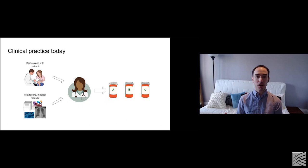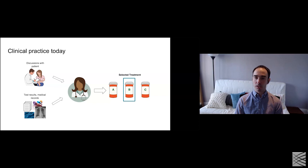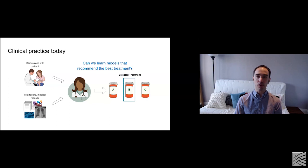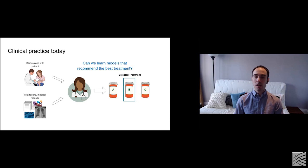Clinicians make treatment suggestions via a very complex process — discussions with patients, test results, medical records — and ultimately make a decision about what treatment to recommend. What we'll be thinking about is how machine learning could recommend the best treatment: perhaps treatment A would be more effective for this patient than treatment B. Building models to recommend the best treatment is at the heart of precision medicine, but even for more mundane treatment policies, this work could help standardize best practices across academic and non-academic medical centers.